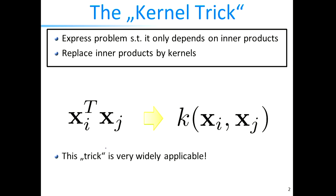The idea is to use linear models to fit nonlinear functions by considering nonlinear transformations into some potentially very high-dimensional space, but then work in that high-dimensional space only implicitly via the inner product in that space. And that's what kernels allowed us to do.